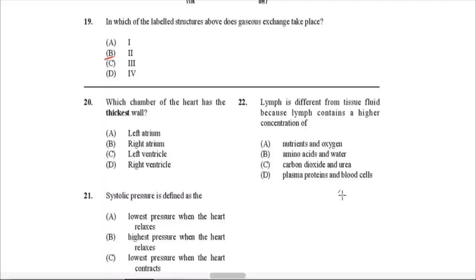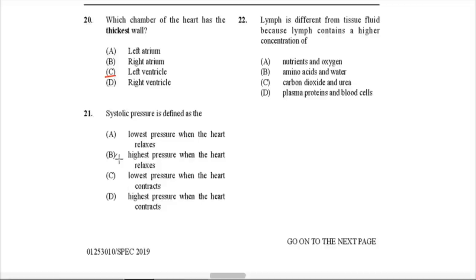Question 20: Which chamber of the heart has the thickest wall? That would be the left ventricle. The reason is that the left ventricle needs to withstand the high pressure of blood coming through from the left side, because that blood needs to be pumped up through the aorta and all around the body. It is under very high pressure, which is why the left ventricle has very thick walls.